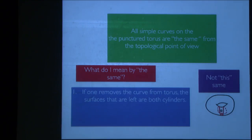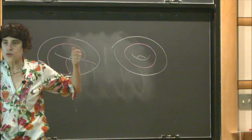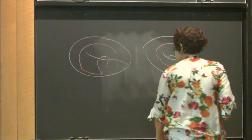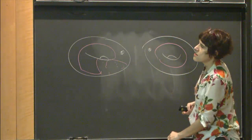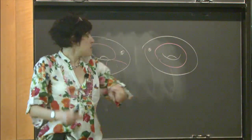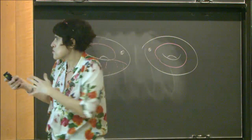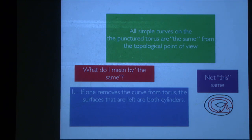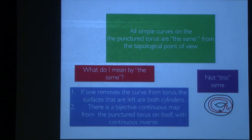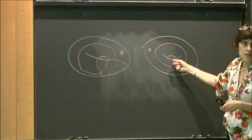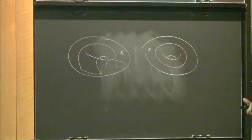They're the same in this sense: if I remove the curve — physically remove it from the torus — I get a cylinder with a hole. When you cut the torus, there's not many surfaces you can get, and it's a sphere with three holes. In this sense, they are the same. It's another way of finding an equivalence relation between curves — not the free homotopy we discussed before. Another way to say this 'same' is that there's a bijective map from the torus to itself that maps this curve to this curve. This map is continuous and the inverse is continuous — that's a homeomorphism.